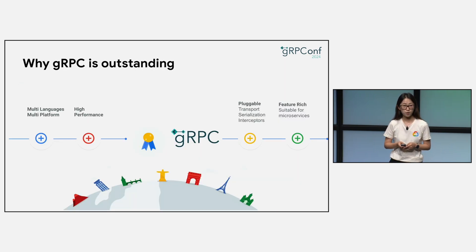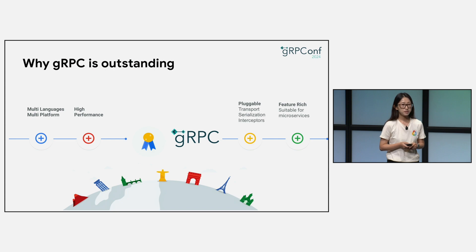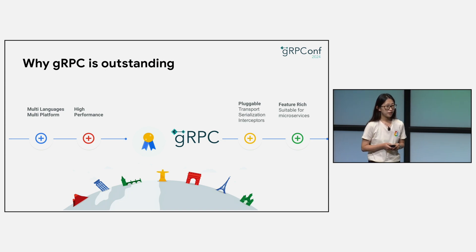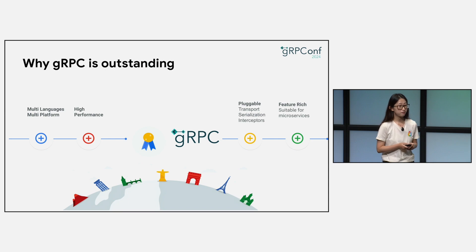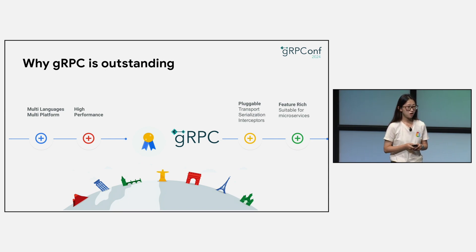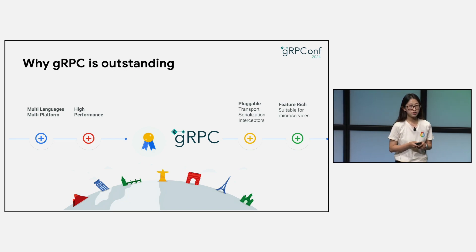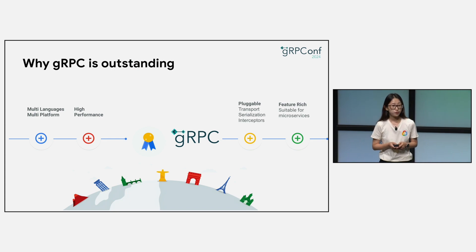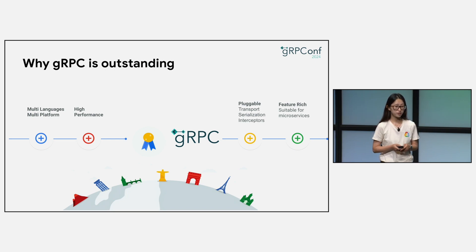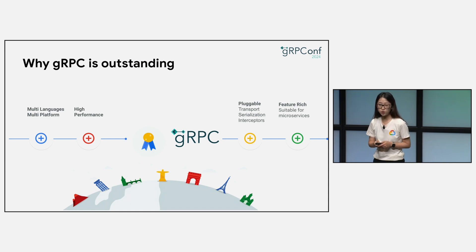gRPC is popular because it is suitable for many needs. In addition to being available in a wide range of platforms and languages, the performance is industry-leading — it is blazing fast, incredibly efficient, and connects your applications and services in a very reliable and smooth way. Many components in gRPC are designed to be pluggable. There are different transports suitable for different devices and environments. You can specify serialization, wire format, or interceptors, et cetera. This makes integrating with your development stack very efficient and flexible. gRPC also has rich features around core traffic management, security, and tailored ones for service mesh, just to name a few.